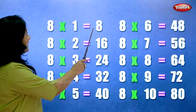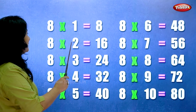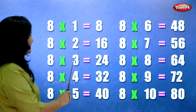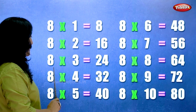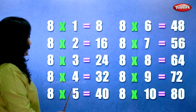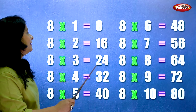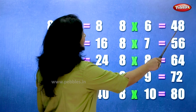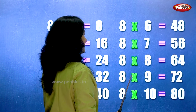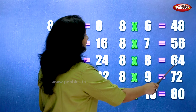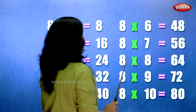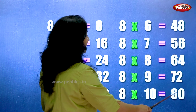Let's learn the table of eight one more time. Eight ones are eight. Eight twos are sixteen. Eight threes are twenty-four. Eight fours are thirty-two. Eight fives are forty. Eight sixes are forty-eight. Eight sevens are fifty-six. Eight eights are sixty-four. Eight nines are seventy-two. Eight tens are eighty.